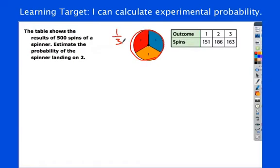One-third of my spins are not necessarily going to be ones, twos, or threes. And that's shown up here in the results of my experiment here. So, again, take a look at the titles of the rows. We have outcomes and we have spins.